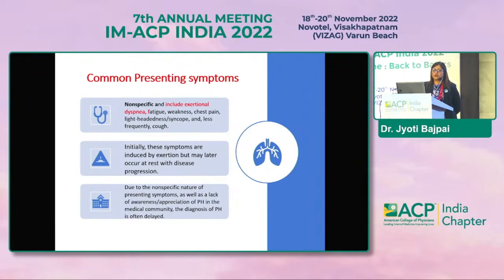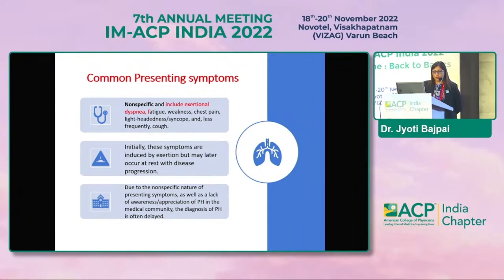Common presentations of pulmonary hypertension are very non-specific symptoms including exertional dyspnea, fatigue, weakness, chest pain, lightheadedness, syncope, and less frequently hemoptysis. Initially these symptoms are induced by exertion, but later as the disease progresses, they occur at rest. Due to the non-specific nature of presenting symptoms and lack of awareness of PH in the medical community, diagnosis is often delayed.